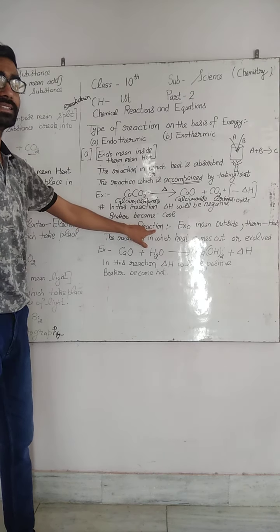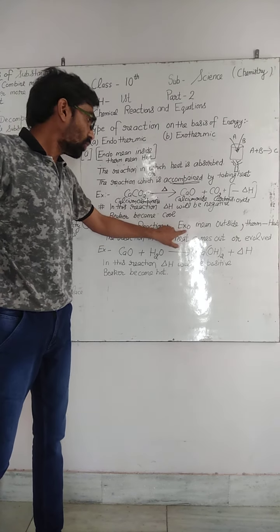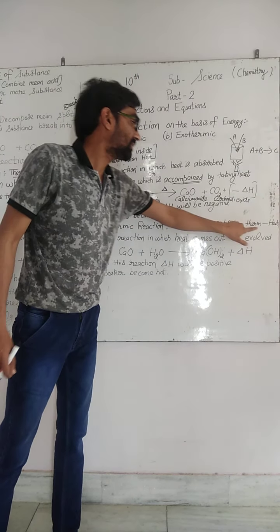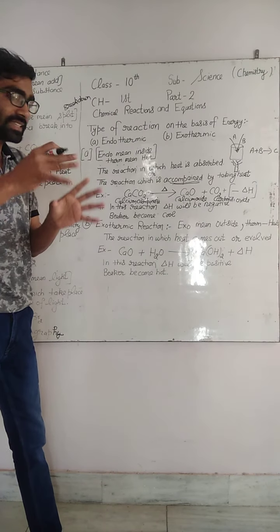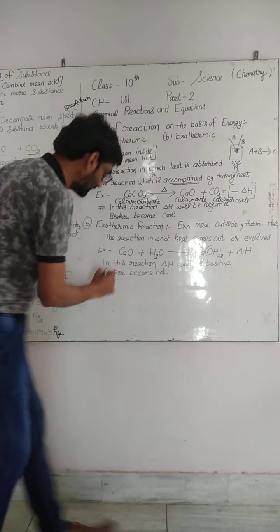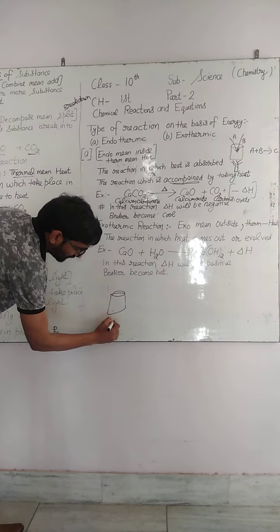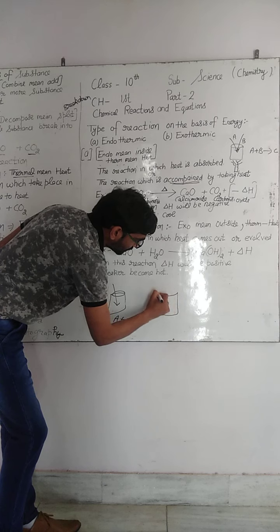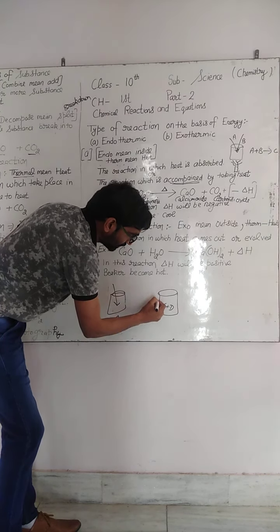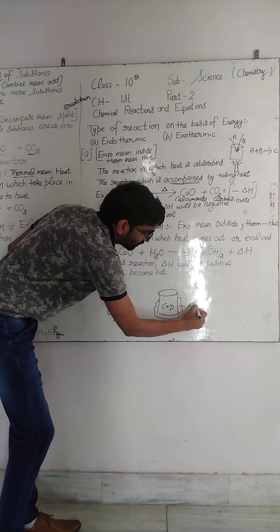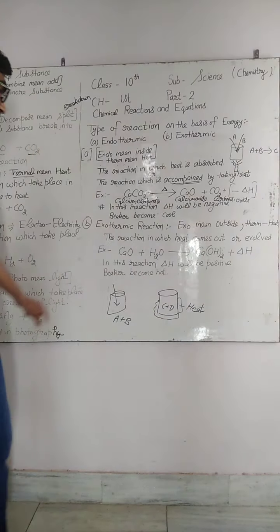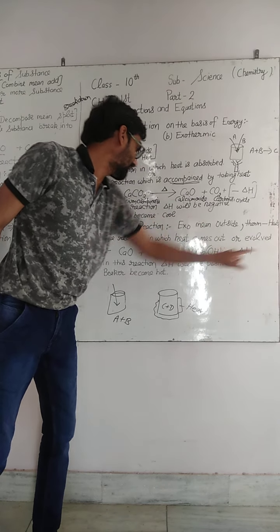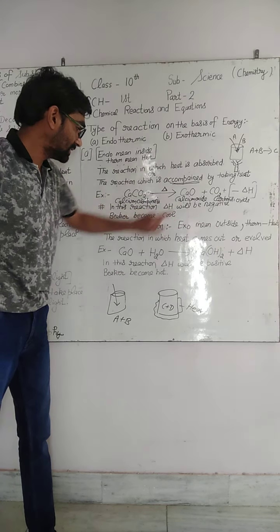Exothermic reaction — exothermic means outside, from which heat evolves. It is a reaction in which heat is released or evolved. Example: calcium reacting to form a calcium salt.